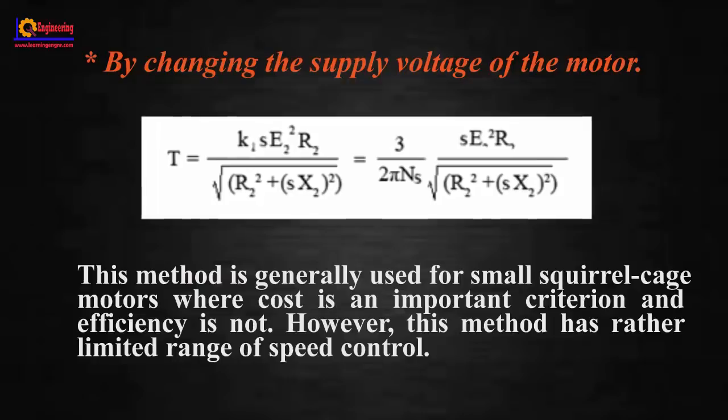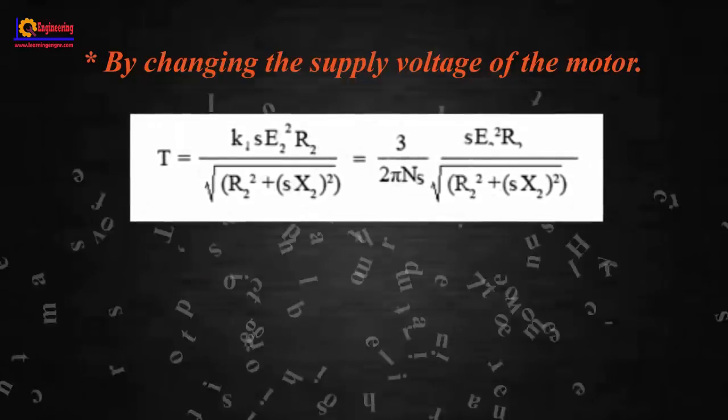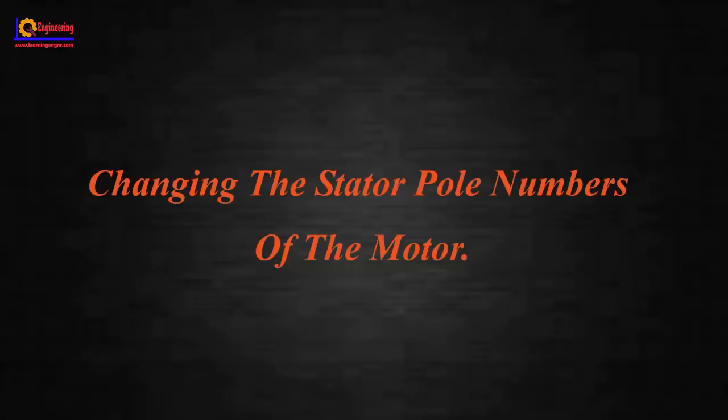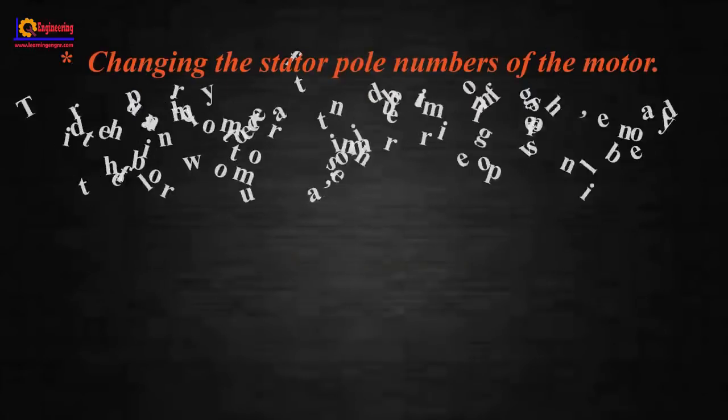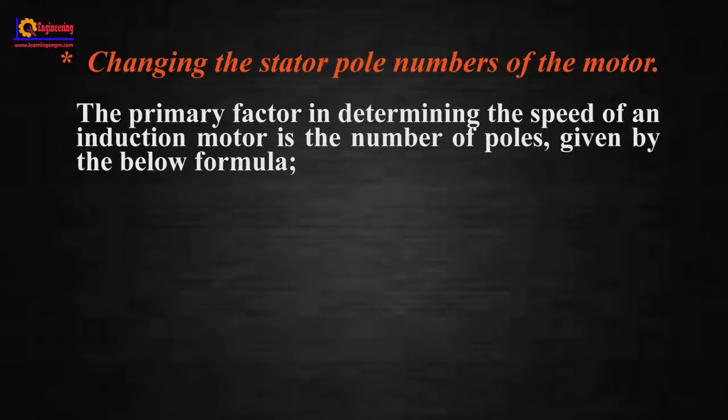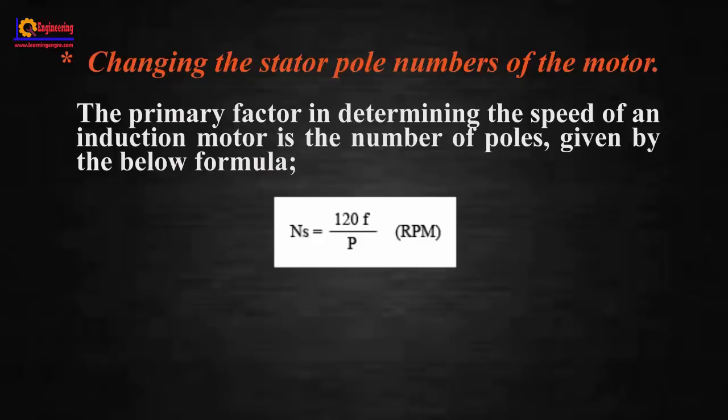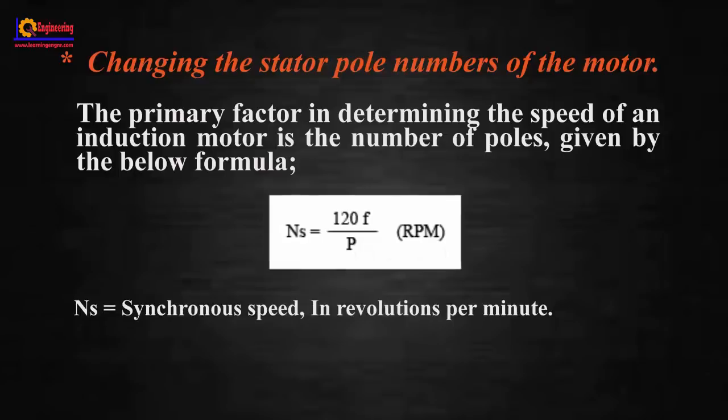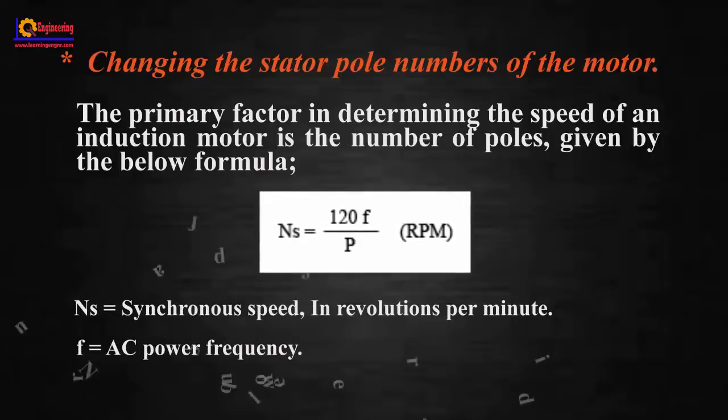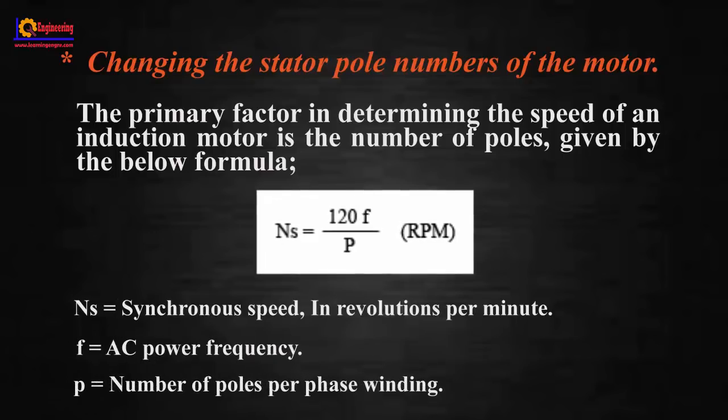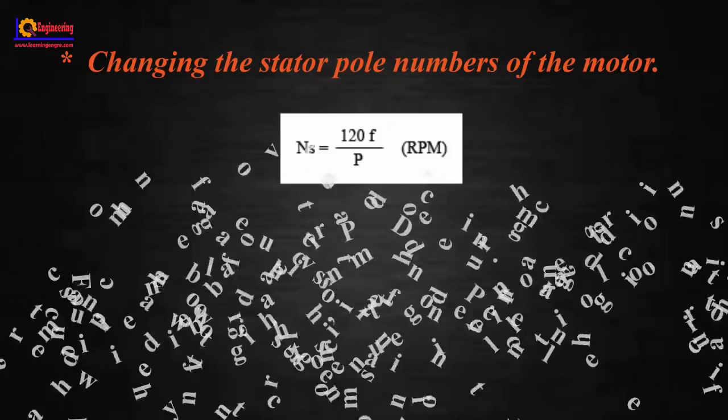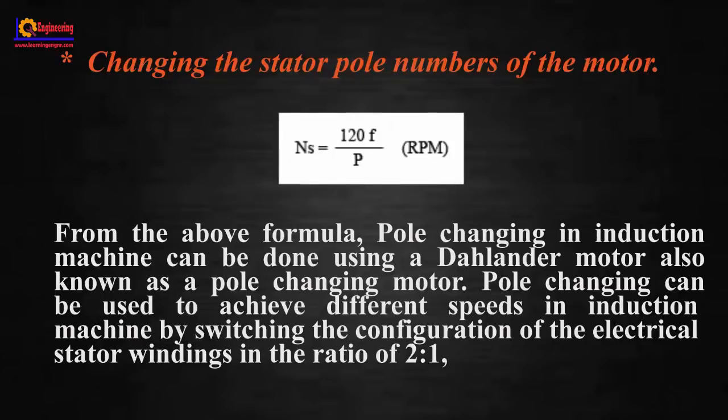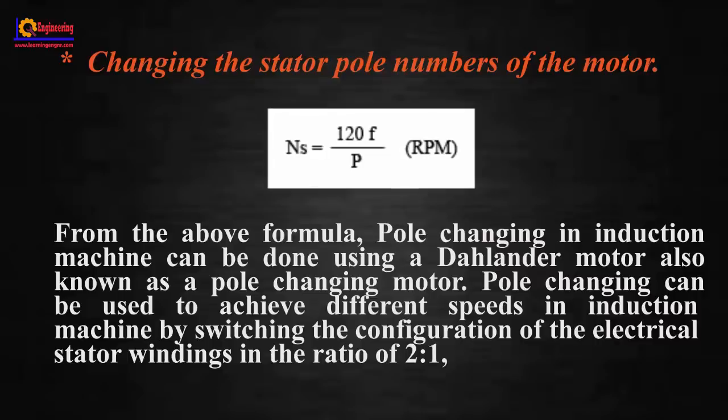Changing the stator pole numbers: the primary factor in determining the speed of an induction motor is the number of poles, given by the formula Ns = 120f/P (RPM), where Ns is synchronous speed in revolutions per minute, f is AC power frequency, and P is number of poles per phase winding. Pole changing in induction machine can be done using a Dahlander motor, also known as a pole changing motor.